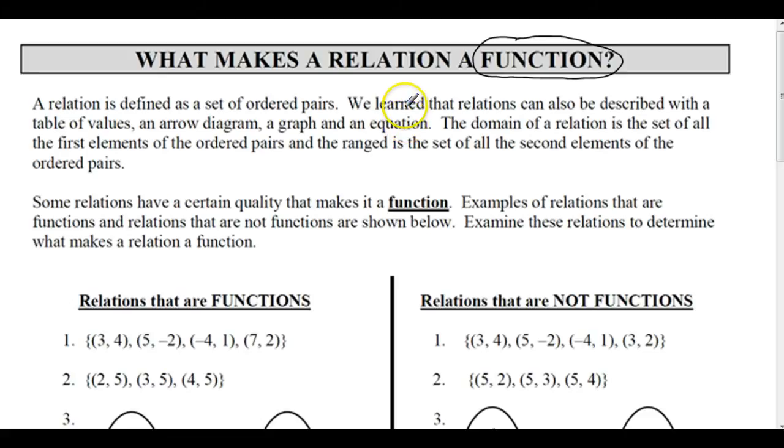an equation, in words. The domain of a relation is the set of all the first elements of the ordered pairs, and the range is the set of all the second elements of the ordered pairs.